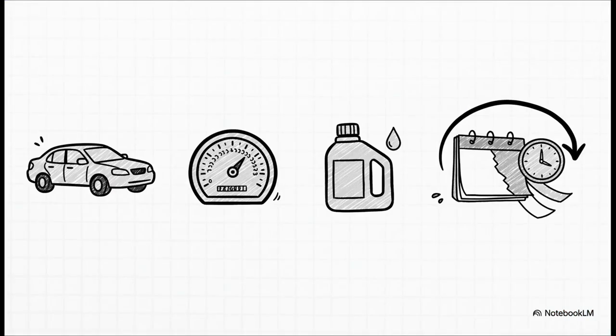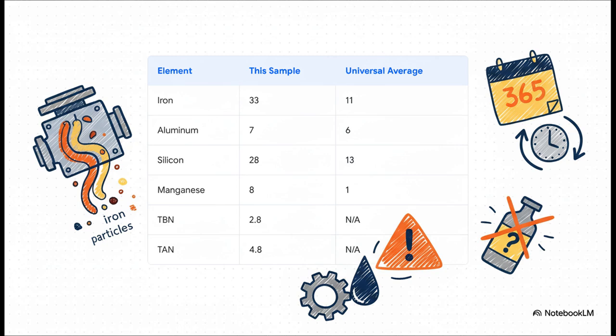Alright, so our patient here is a 2017 Honda Accord. It's got a pretty respectable 95,000 miles on it. The oil is Valvoline's Restore and Protect, and it was in the engine for about 4,250 miles. But here's a detail that's going to be really important later: that mileage was put on over more than 8 months.